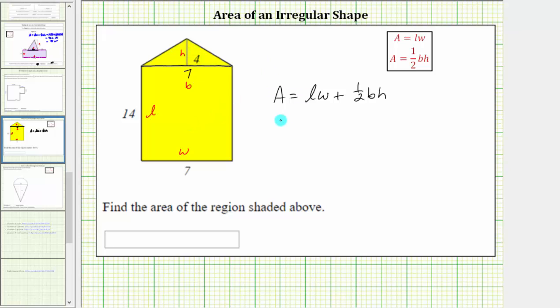And therefore the area of the pentagon is equal to length times the width of the rectangle, 14 units times 7 units, plus the area of the triangle, which is one-half times the base of 7 units times the height of 4 units.